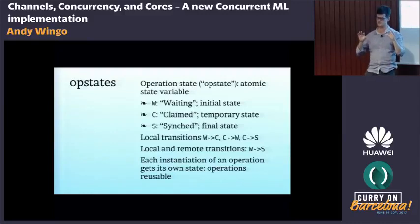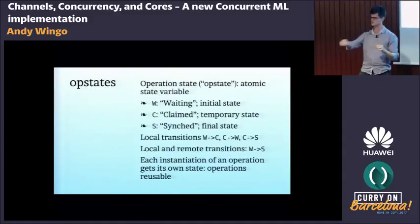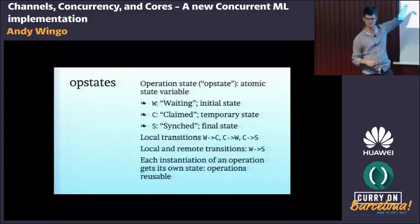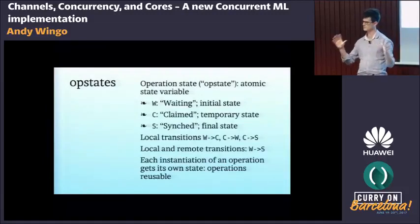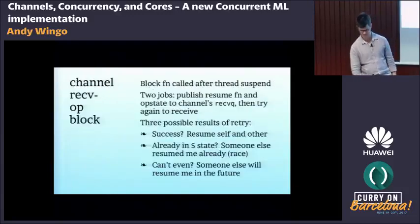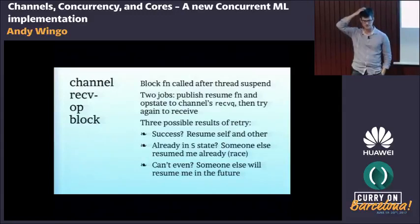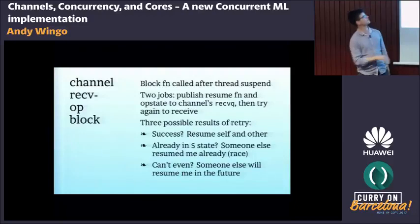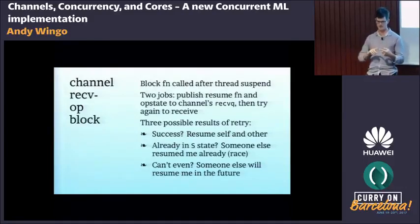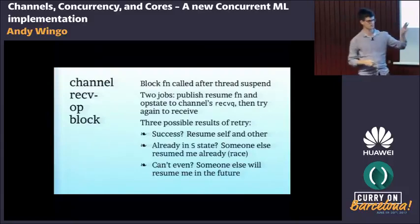We drive towards the 'synced' state. Every time you perform an operation you get a fresh op state; that's what distinguishes different operations. An operation can be performed many times — it's a data abstraction, not code in motion. The block function is called after thread suspend. It has two things to do: publish that I'm waiting on this operation, then retry the operation. The results of this retry can be three things.